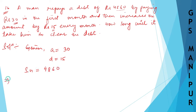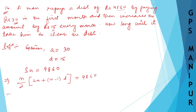So let me put the formula for S_N. It will be N divided by 2 into 2A plus N minus 1 into D. Let me use this formula, which should be equal to 4860. So N divided by 2, 2A — A is 30, so 2 into 30.